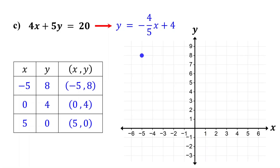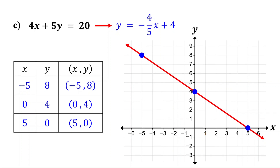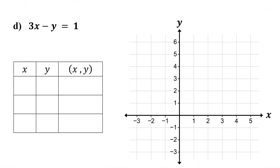Now plot each point on the coordinate plane. If you want to review how to plot points on a coordinate plane, check the link in the description. Since the points line up, draw a line through them. This is the graph of the equation. Now it is your turn. Please pause the video and graph the equation by plotting points. First, isolate y on one side of the equation. Since the equation doesn't include fractions, you can choose any three values for x, but pick those that make the calculations easier.